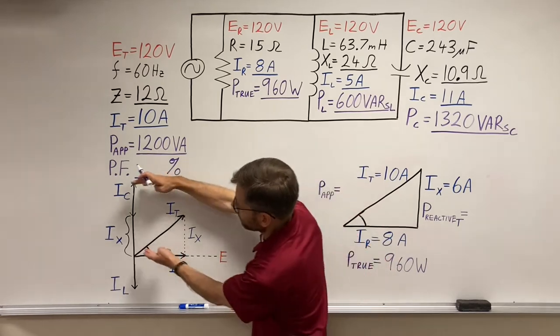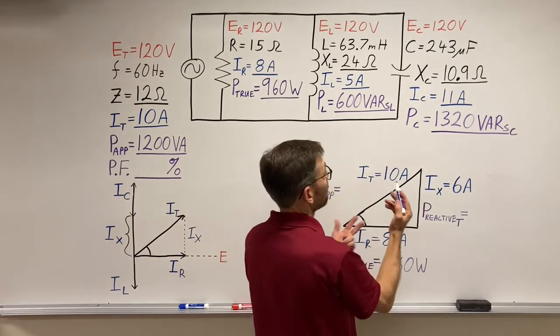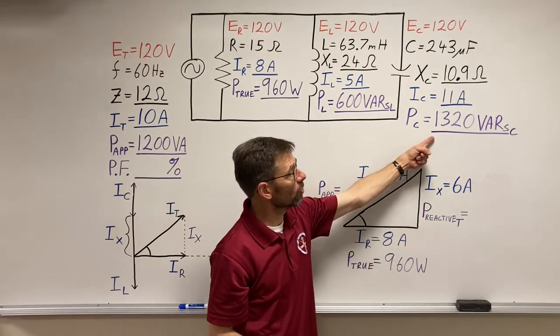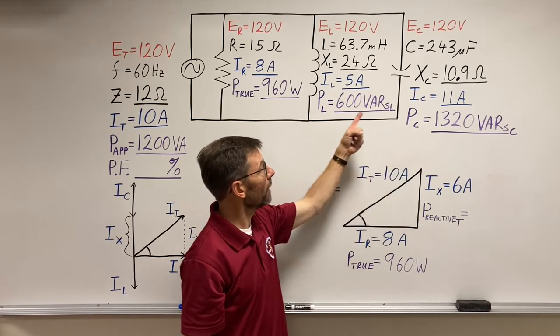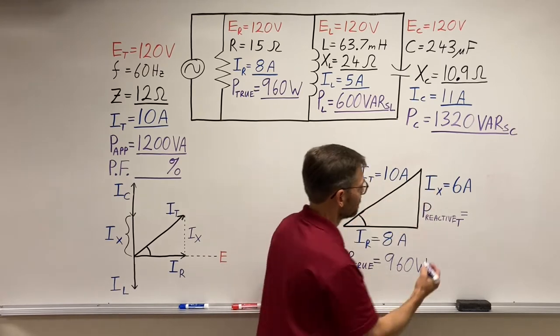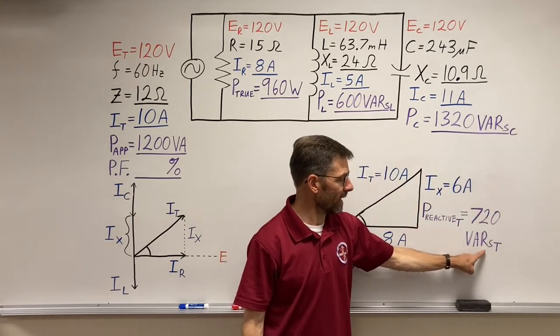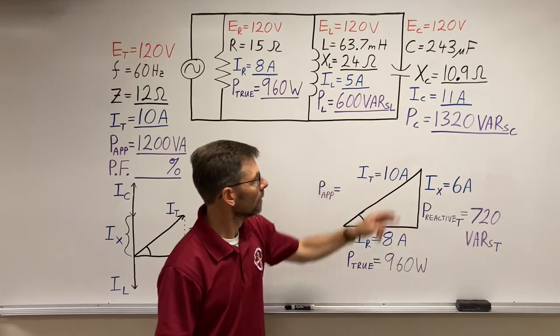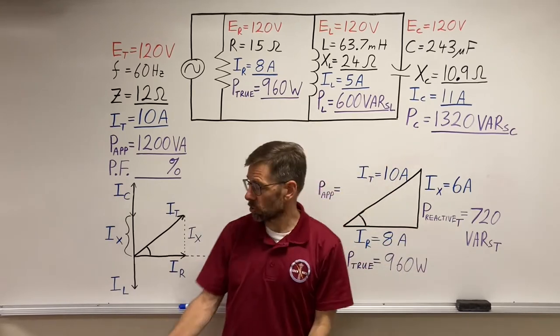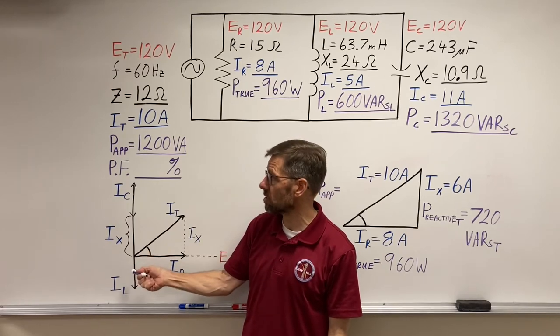So we take the bigger power vector minus the little power vector: 1320 VARs minus 600 VARs, and I'll just put VARs total - volt amps reactive total. That's the combination of those, or the difference of them really, vectors going in opposing directions.